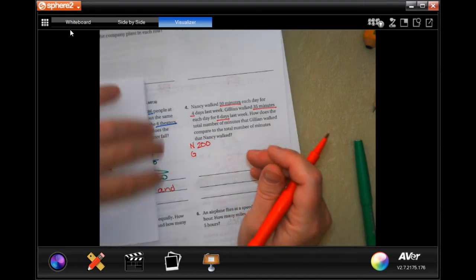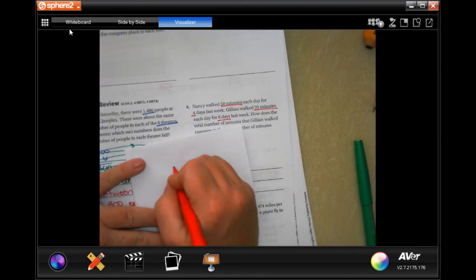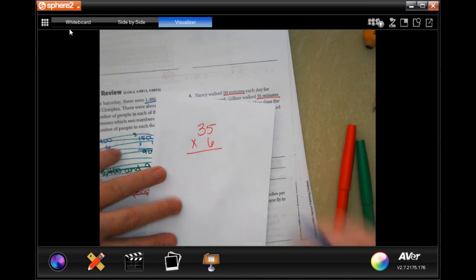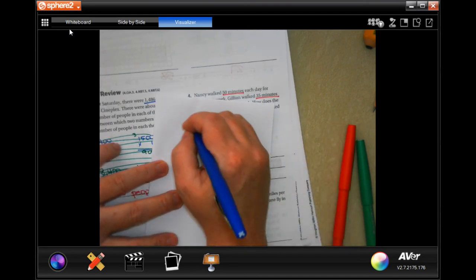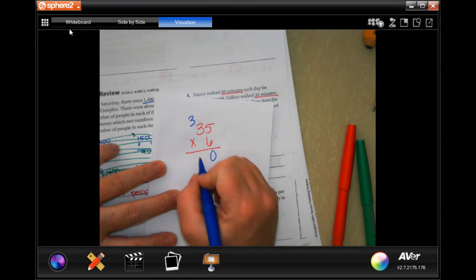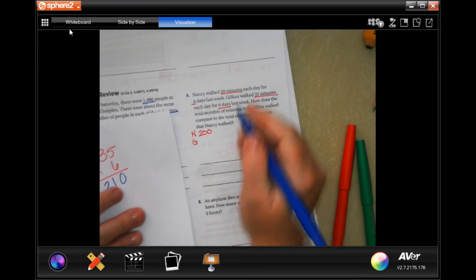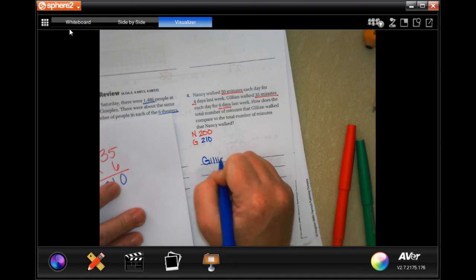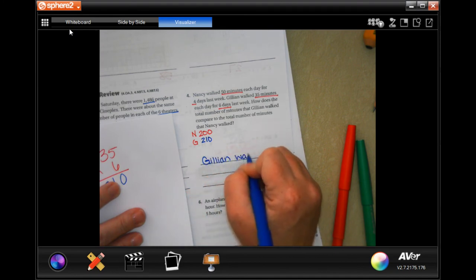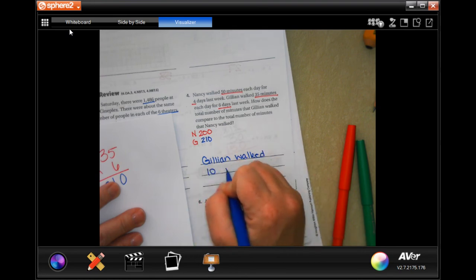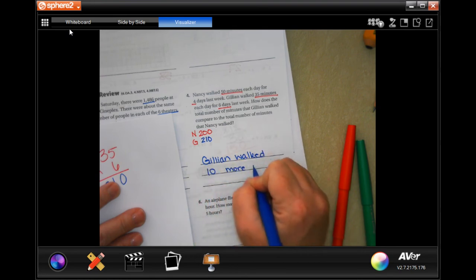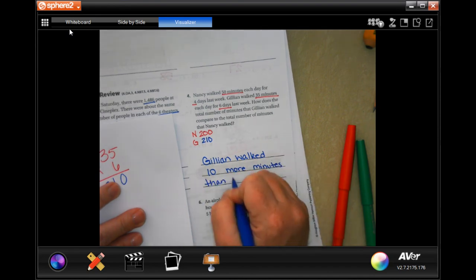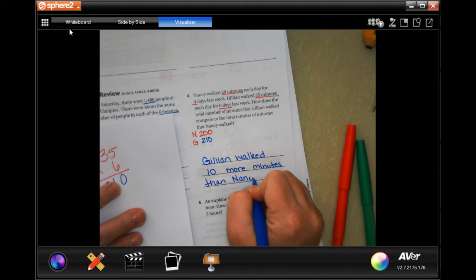Jillian, I don't think I'm going to be able to do that in my head. So, I'm going to go 35, and I'm going to multiply that by 6. So, 6 times 5 is 30, carry the 3. 6 times 3 is 18, plus 3 more is 21. So, Jillian walked 10 more minutes than Nancy.